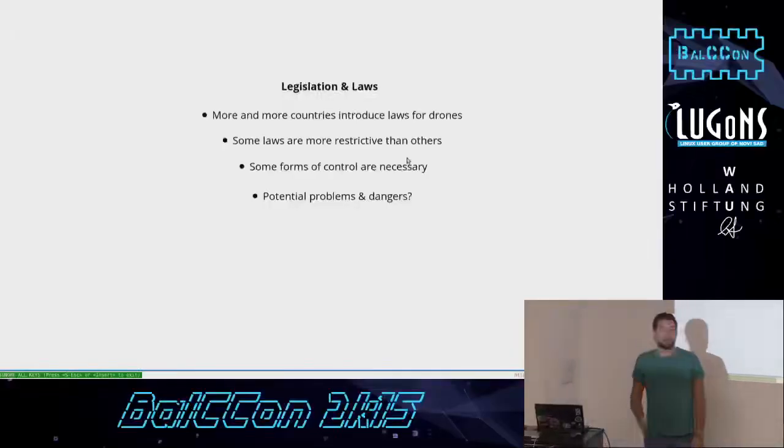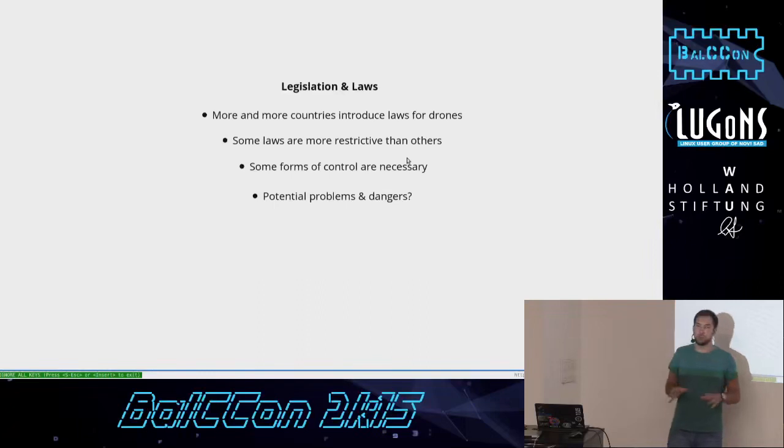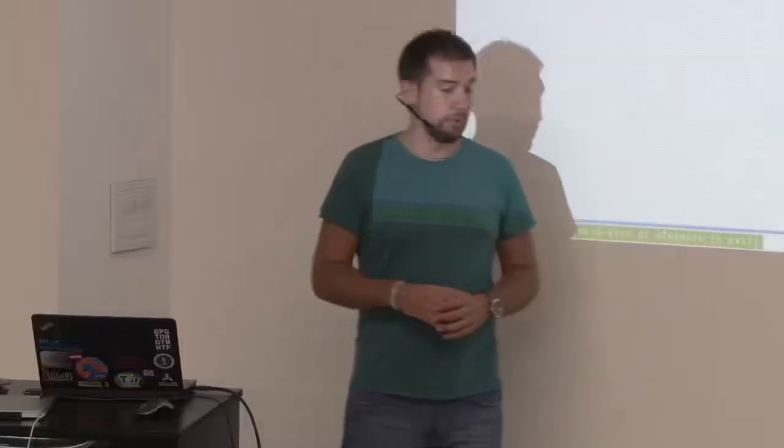Some forms of control are necessary. The main problem is that you cannot actually control drones except who's buying it and does the person have any type of license. You cannot see them on the radar. They're too small. You cannot track them that easily. They use frequencies that are open to the general public. Most use 2.4 GHz. That's the same frequency as wireless. There's potential problems and dangers. Thankfully, there wasn't too many cases of serious damage with drones globally. Three days, four days ago, we had a drone crash in the US Open, but it didn't hurt anyone. The guy just crashed it on the US Open match.